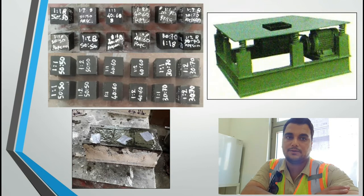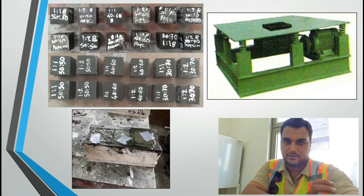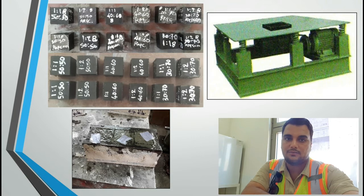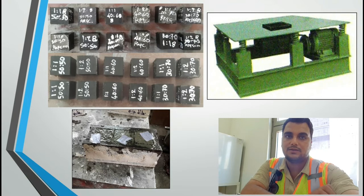The polymer mortar with different proportions was prepared using an electrical mixer. For each polymer, the resin was mixed with the hardener for 2 to 5 minutes. Once secured, cement and sand were mixed for 5 minutes. After complete homogenization, the polymer mortar was introduced into the mixture and mixed for 10 minutes until achieving a homogeneous mix. After complete mixing, the polymer mortar was poured into molds.